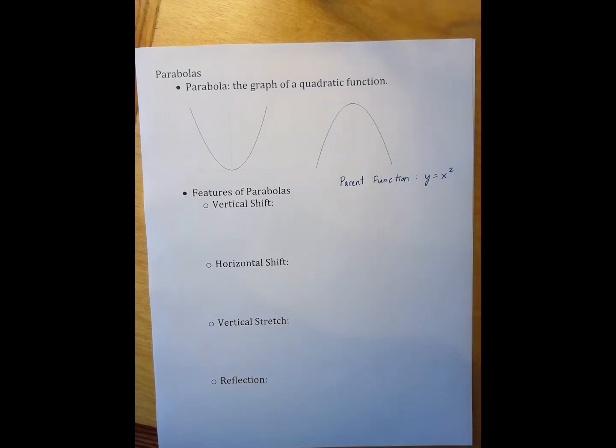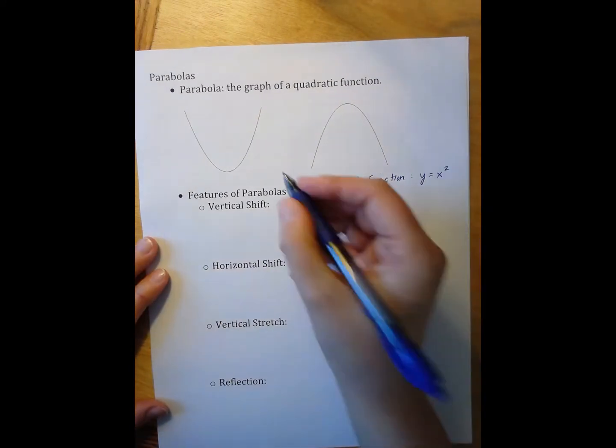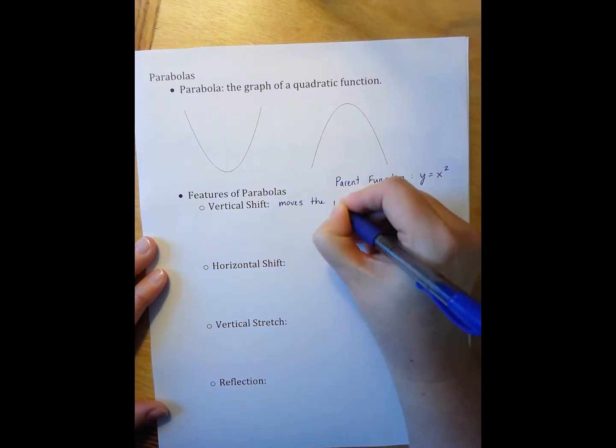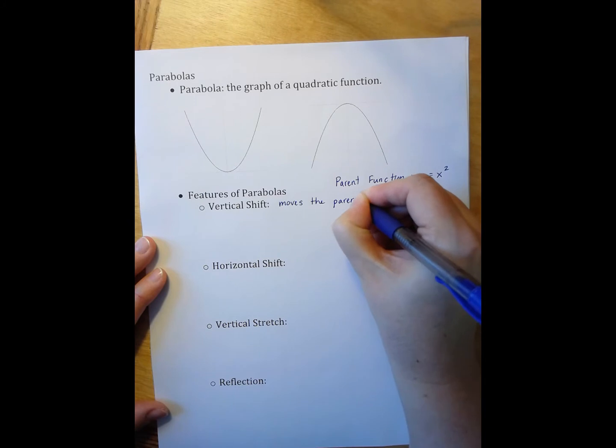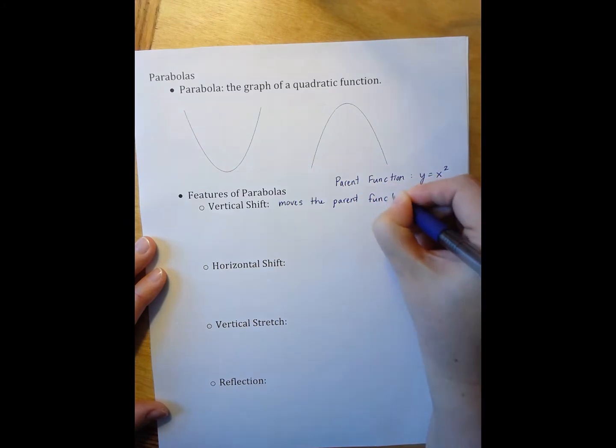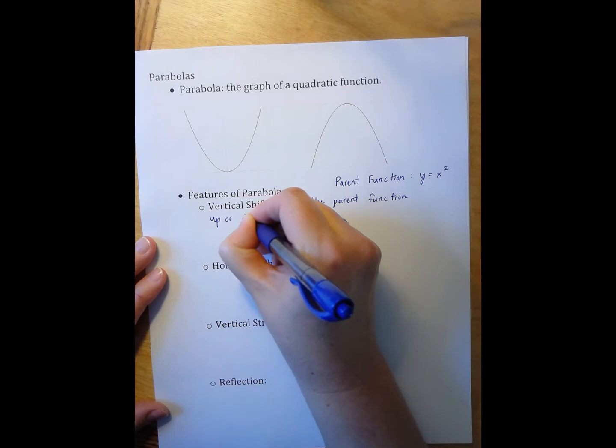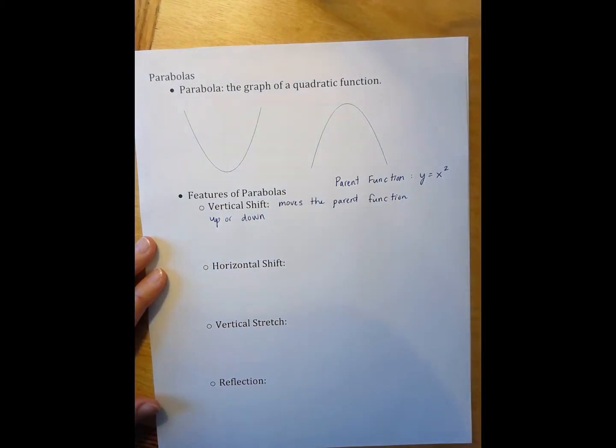So a vertical shift is a shift that moves the curve, moves the parent function, up or down. That's the vertical direction. It doesn't change the general shape of the function, but it does change where on the coordinate plane the graph sits, higher or lower than our parent function.